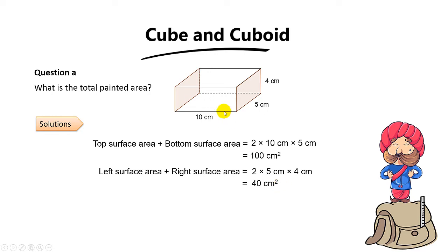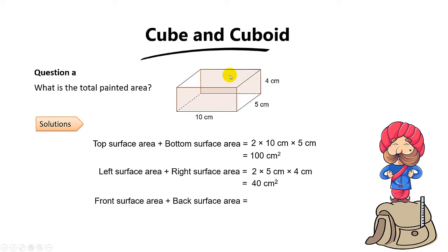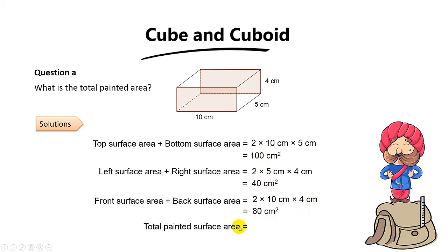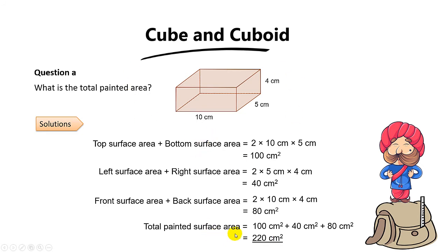Lastly, you have to find the front and the back. The front and the back will be 2 times 10 times 4 — you get 80cm². You just need to add them all together and you will get a final answer of 220cm². That will be the total painted surface area.